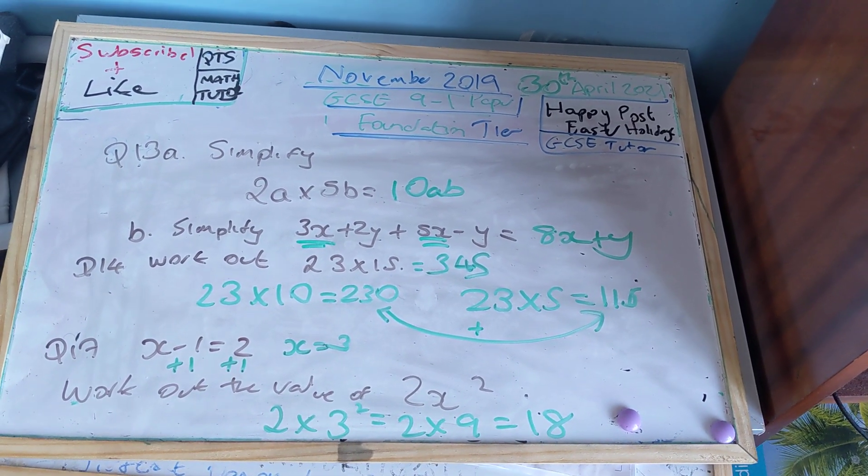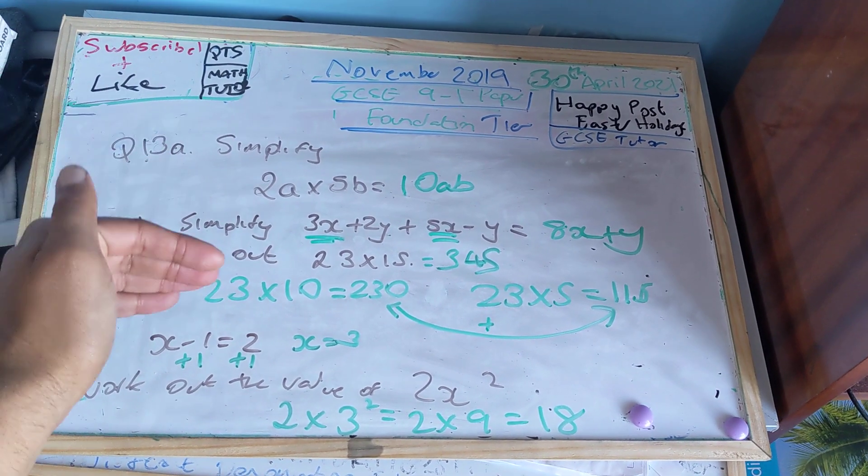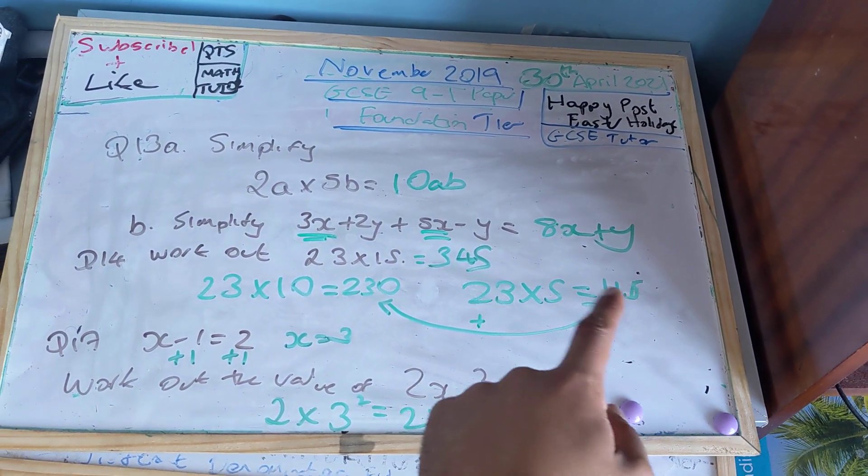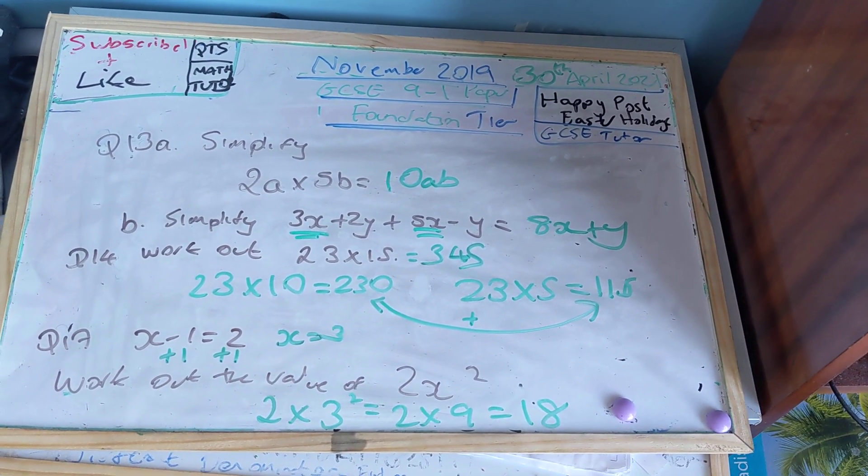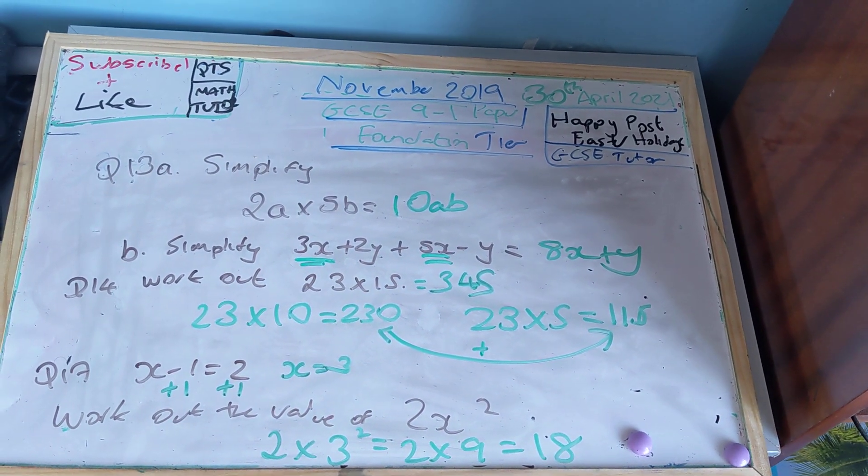Question 14 says work out 23 times 15. 23 times 10 is 230, so add a 0. 23 times 5 is half of this answer, so it's 115. 230 plus 115 is 345.